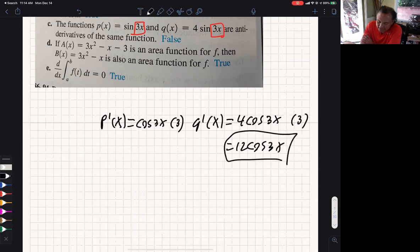That is not the same as this, which is 3 cosine of 3x. So definitely, they are not antiderivatives of the same function. So when you take the derivative of an antiderivative, you should start with that original function. They are not the same.